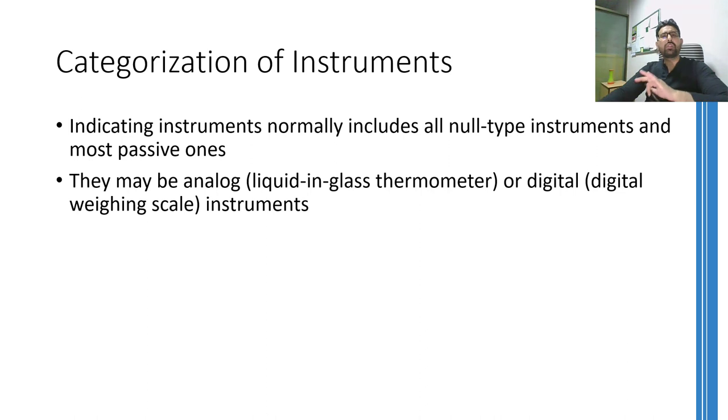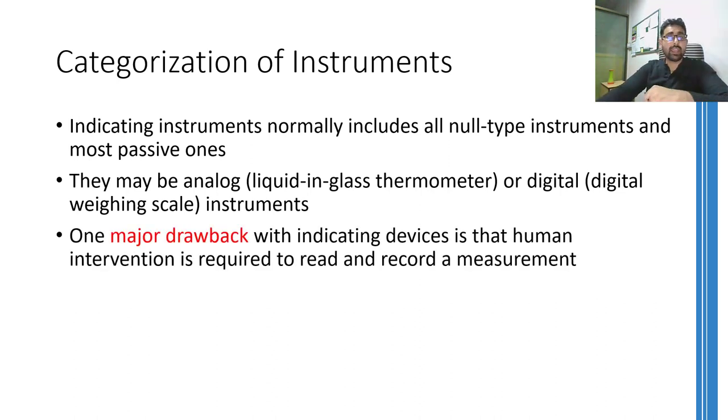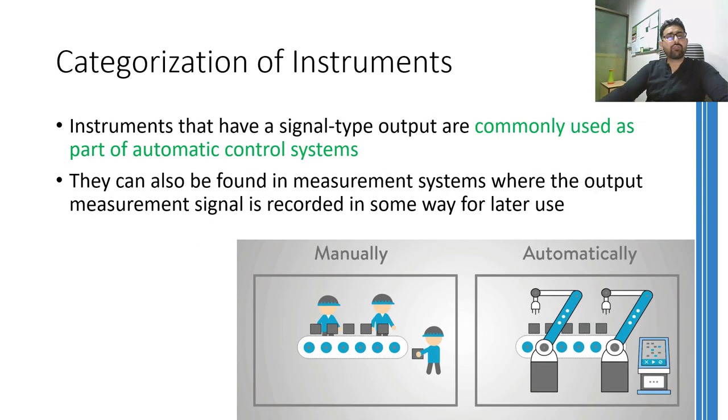Furthermore, almost all null type and passive instruments are indicating type. You must have guessed the drawback of such instruments by now. Yes, they require human observer to read the value. On the contrary, instruments with signal output generates a signal proportional to the measured physical quantity. This signal is fed directly to a controller which is responsible for maintaining the system automatically. Sometimes humans have installed indicating instruments on the signal wire to convert the signal into the measured quantity so that they can troubleshoot the automatic control system. An example of these type of instrument is a temperature sensor installed in the AC at your home. You have no idea of the temperature that sensor is measuring because it is generating an electrical signal proportional to the temperature it is sensing. This signal is fed to the controller of the AC that controls the working of the compressor to maintain set temperature in your room.